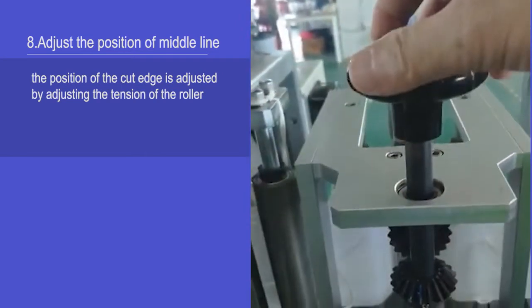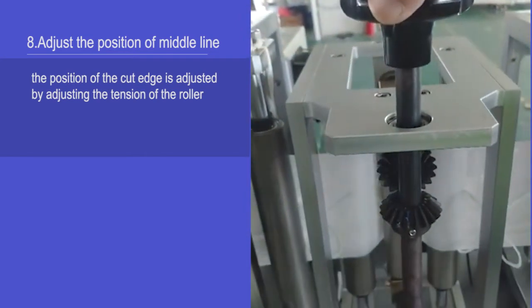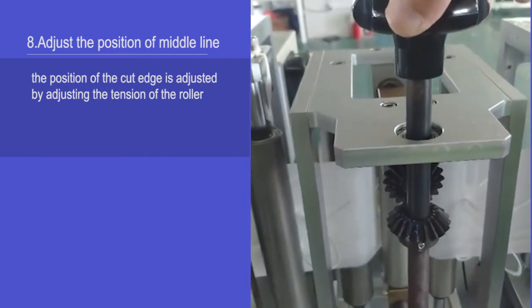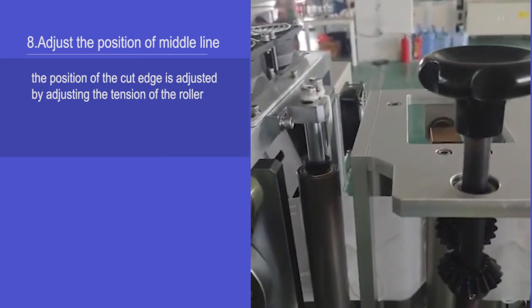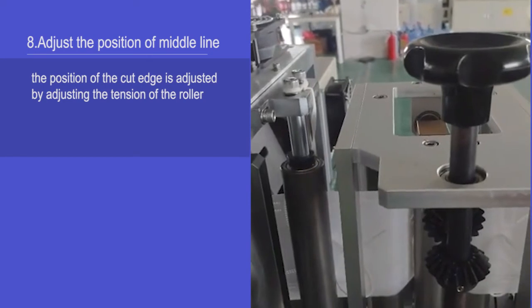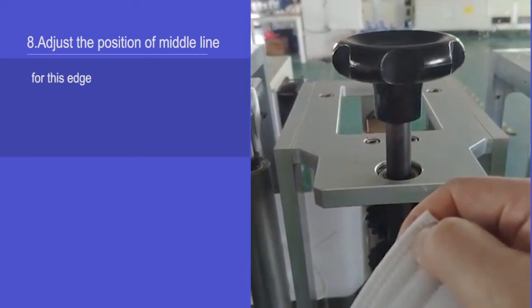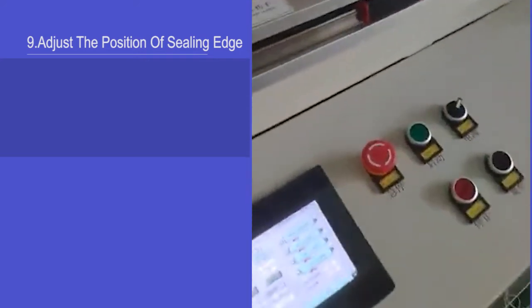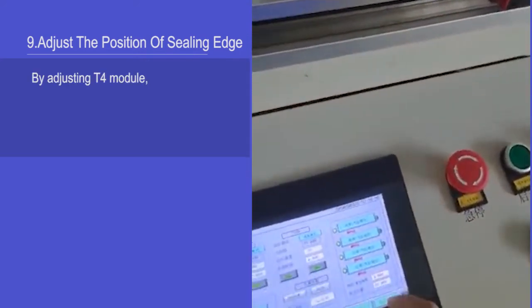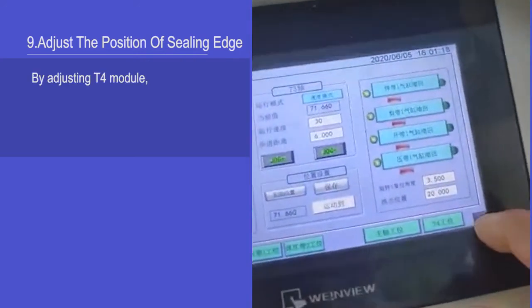The position of the cut edge is adjusted by adjusting the tension of the ruler. For this edge, adjust the position of ceiling edge by adjusting T4 module.